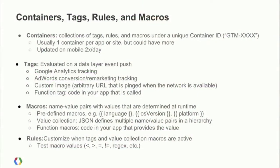So let's talk a bit about containers, tags, rules, and macros. A container is a collection of these values. Normally you'd have one container for a website or one container per application. So if you published three different applications, you'd probably want a separate container for each one. It's possible to have multiple containers for an application, but that's not common. A container has a container ID associated with it, and as you remember, when we initialized our container we provided that ID and got back the container on the device. For mobile, containers are updated twice a day.